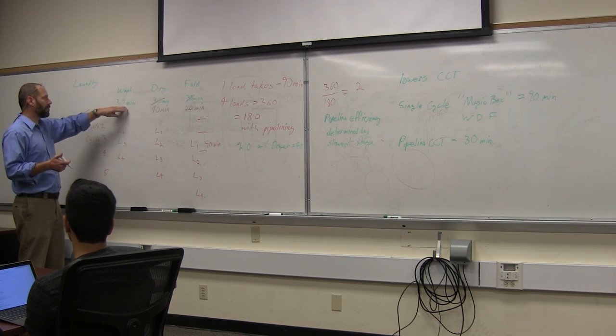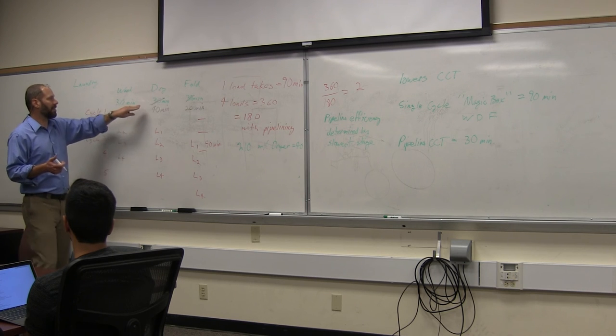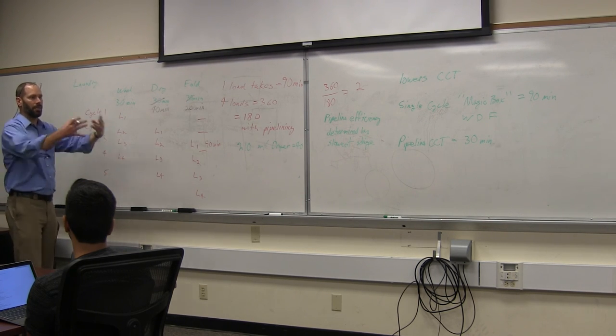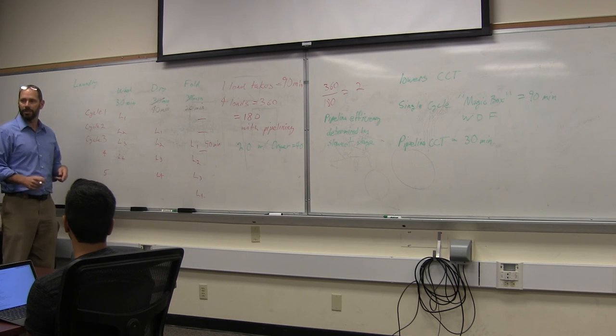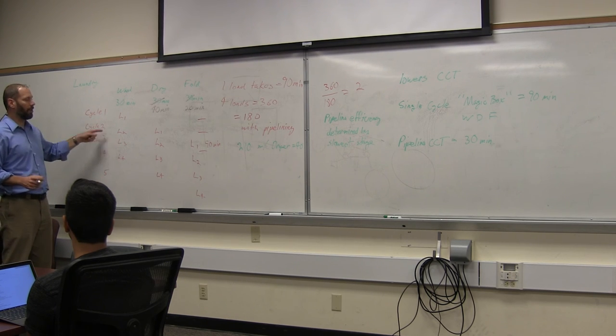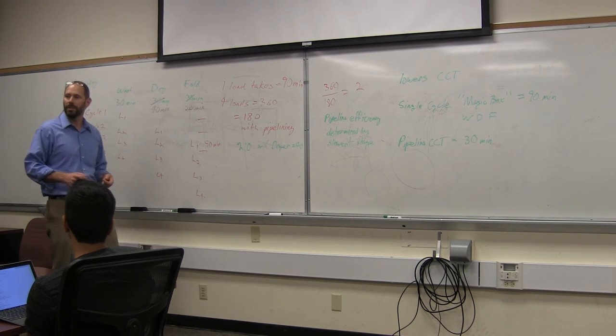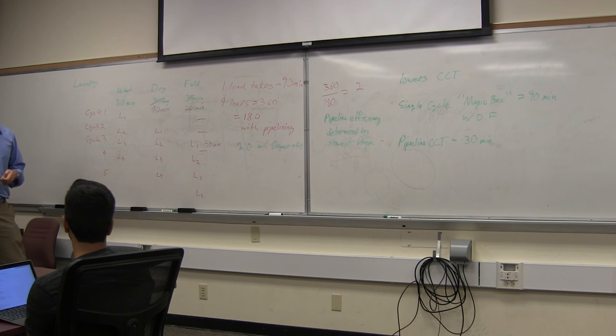If we break it out, if we do the pipeline, it equals 30 minutes because we can be putting a new load of laundry into the system every cycle or every 30 minutes in this case. So we only have to wait for, this assumes that they're all the same speed. Then we can advance the laundry through the system every 30 minutes. So we have a new load of laundry going in every 30 minutes, and we have a completed load of laundry coming out every 30 minutes.